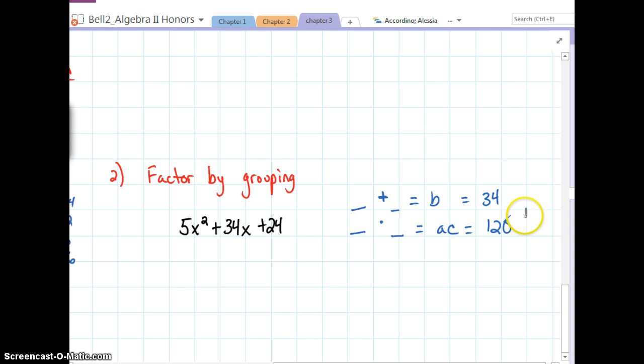Well, there's a lot of things that multiply to 120. 1 times 120. 2 times 60. 3 times 40. 4 times 30. Well, 4 and 30, if we add those up, we'll get 34. And, again, we're adding to a positive and multiplying to a positive. So, both our numbers have to be positive.